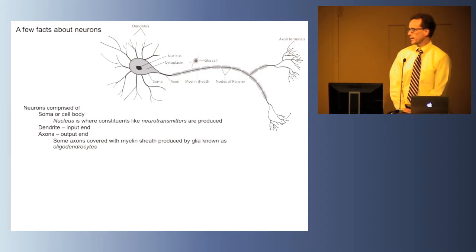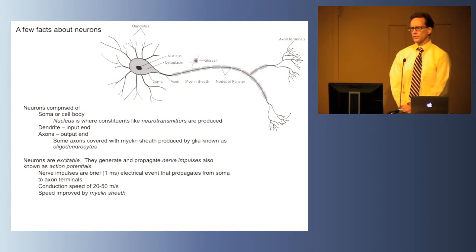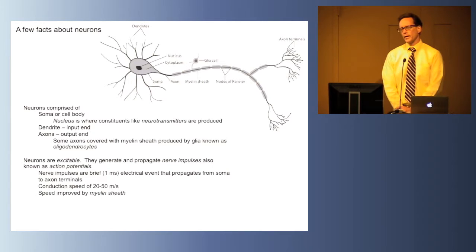The axons of some neurons are covered with a myelin sheath produced by a type of glia known as oligodendrocytes, and this myelin sheath facilitates the transmission of the nerve impulse from the cell body to the end of the axon. Neurons are special because they're excitable, they're irritable. They generate and propagate nerve impulses.